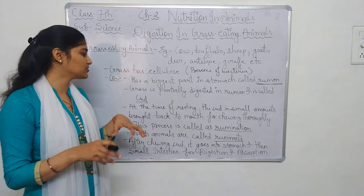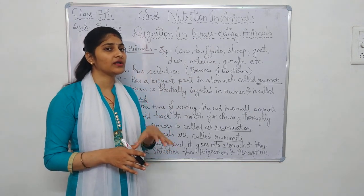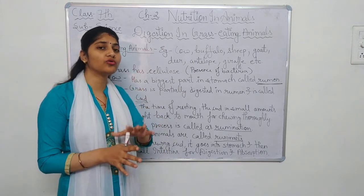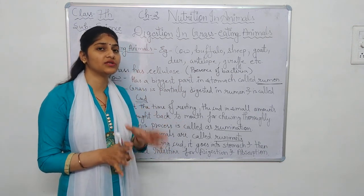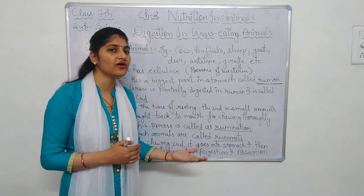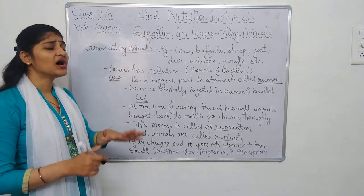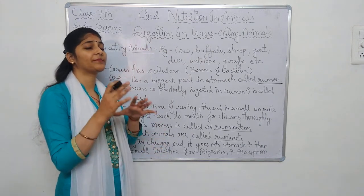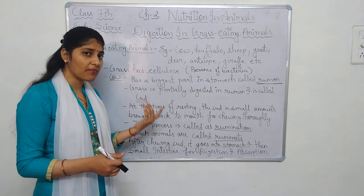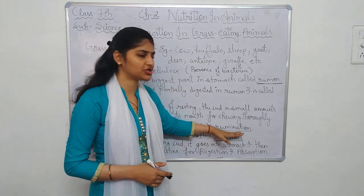After thoroughly chewing this cud, it goes to the stomach. This time, the cud does not go into the rumen — it goes into the stomach and then to the small intestine for digestion and absorption. Since the cud, that is the partially digested grass, comes back to the mouth, the process is called rumination.